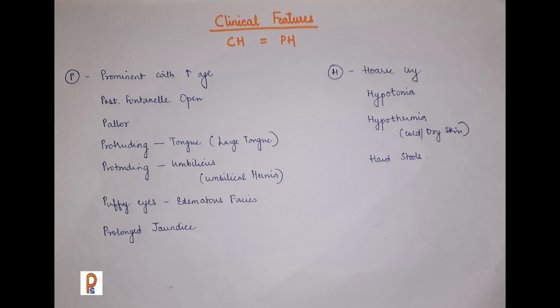The clinical features of congenital hypothyroidism can be remembered with the letters P and H. Very few features are identifiable in the neonatal period; they become more prominent with increasing age. By the time you identify features clinically, the child may have already developed intellectual disability. This is why neonatal screening is essential. Features beginning with P include: posterior fontanelle open in the baby.